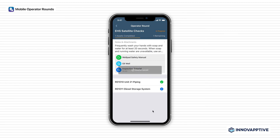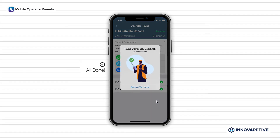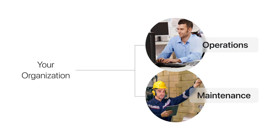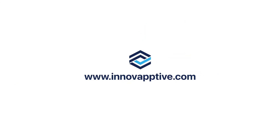Innovaptive's mobile operator round solution is guaranteed to streamline your preventive maintenance workflow and boost worker productivity. Bridge the silos between operations and maintenance at your organization by implementing this as a standalone solution or integrating with your existing work order management solution. Best of all, this solution can be customized to meet your unique needs with our patented no-code RACE technology. Thank you for watching, and for more information on operator rounds, please visit us at Innovaptive.com.